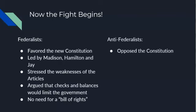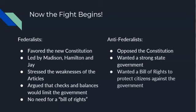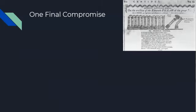The Anti-Federalists did not like the Constitution because they thought it gave too much power to the federal government, and they wanted state governments to be the ones with more power. They also wanted a Bill of Rights because they didn't think there were enough protections for citizens in this new Constitution.